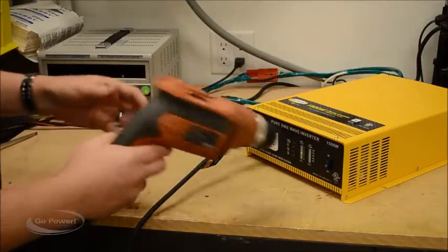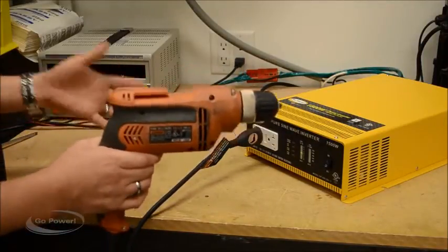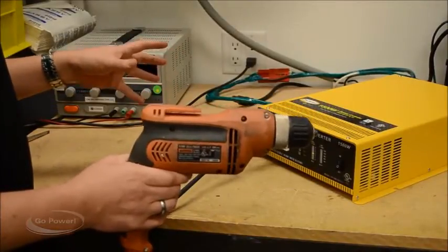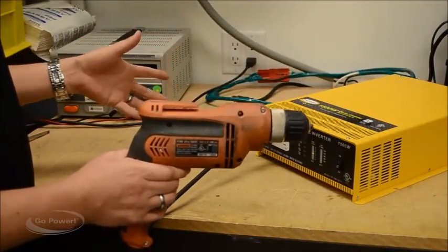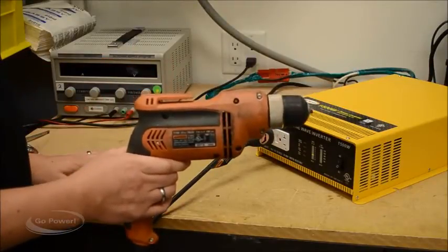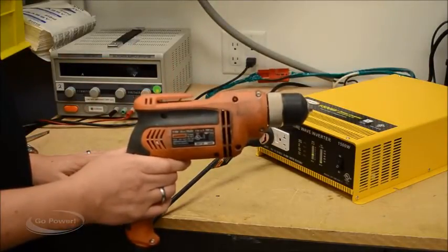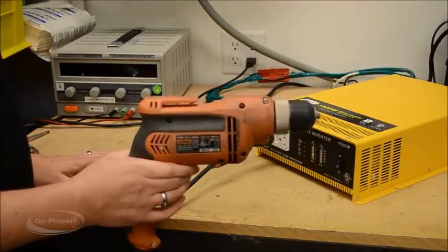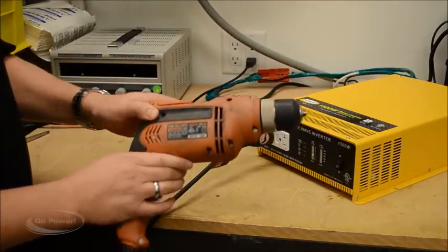An example of this, tools like a corded drill, when they have a variable speed, they often won't give you variable speed off of a modified sine wave, but as you can see, I'll show you with the pure sine, we can do slow, medium speed, and high speed, all without having any issues.